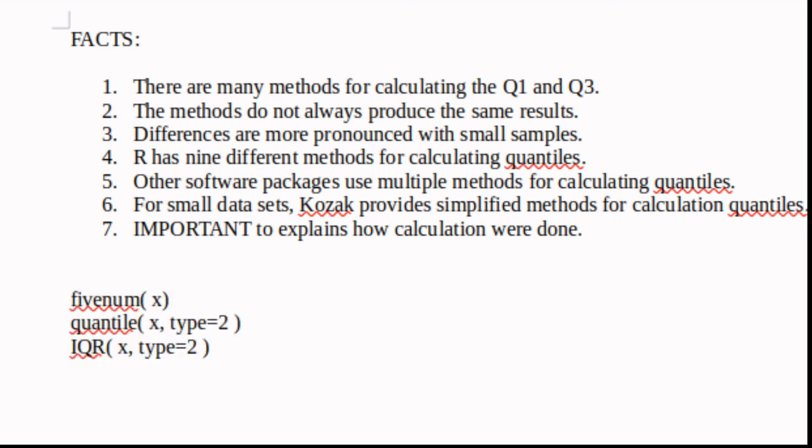And finally if you're trying to use the results that agree with what MyOpenMath is asking for, then the fivenum function, the quantile with the type 2 option, or interquartile range with the type 2 option are probably most of the time going to give you results that agree with mom.